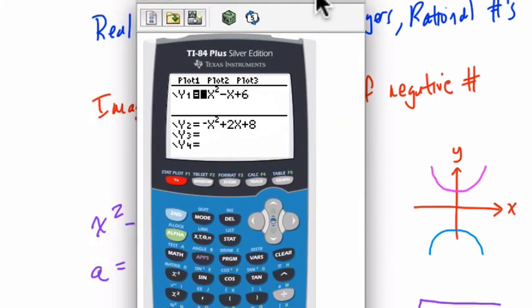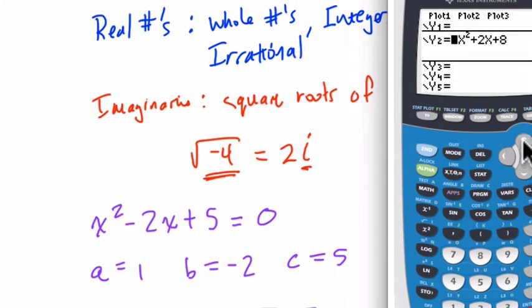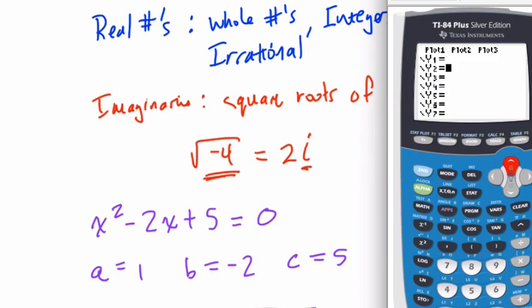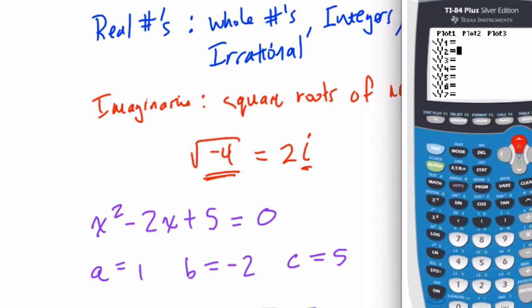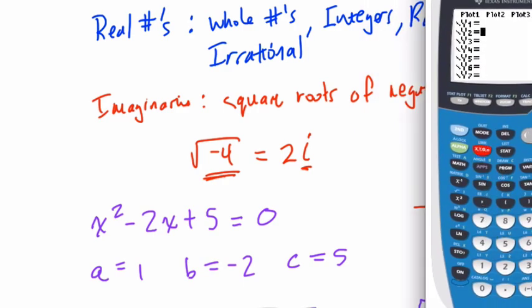On the graphing calculator, we go to our y equals button. Clear off any old equations. Get rid of them. You don't need those. Clear, enter. Now, enter in this equation. Our equation is x squared minus 2x plus 5.